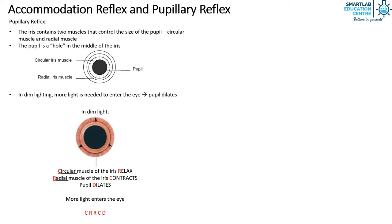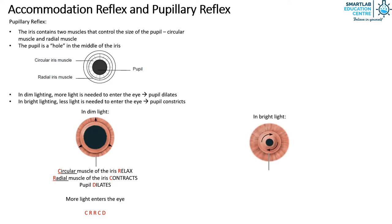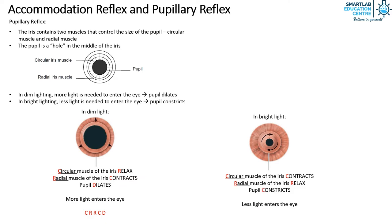In bright lighting, less light is needed to enter the eye, hence the pupil constricts. In order for the pupil to constrict in bright light, the circular muscle of the iris contracts and the radial muscle of the iris relaxes. And the pupil constricts, allowing less light to enter the eye. You can remember this process with the acronym CCRRC.